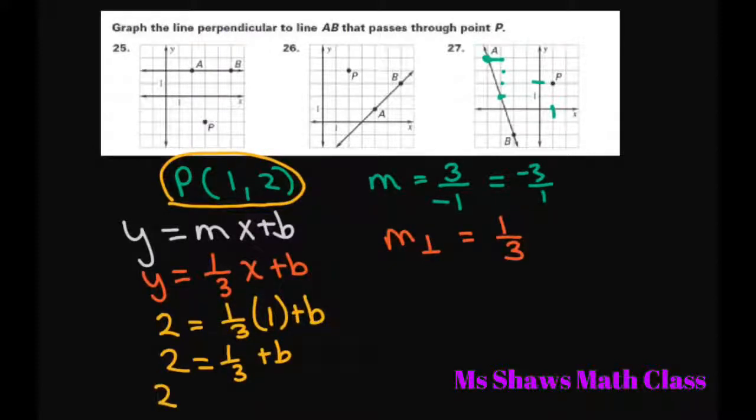So we get 2 equals 1/3 plus b. Subtract 1/3. And that's going to give you, if you want to write this out, this would be like 6/3. Because that equals 2 minus 1/3 equals 5/3. And that equals your b.